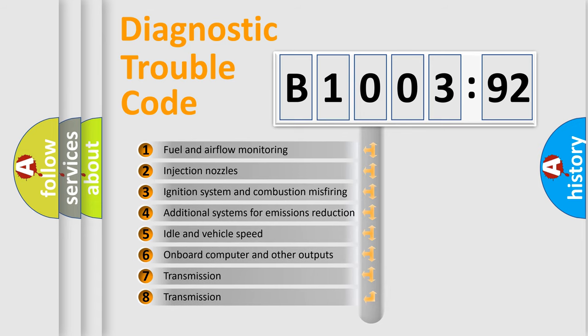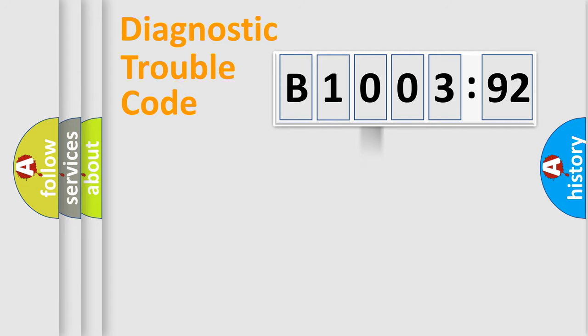The third character specifies a subset of errors. The distribution shown is valid only for the standardized DTC code. Only the last two characters define the specific fault of the group.